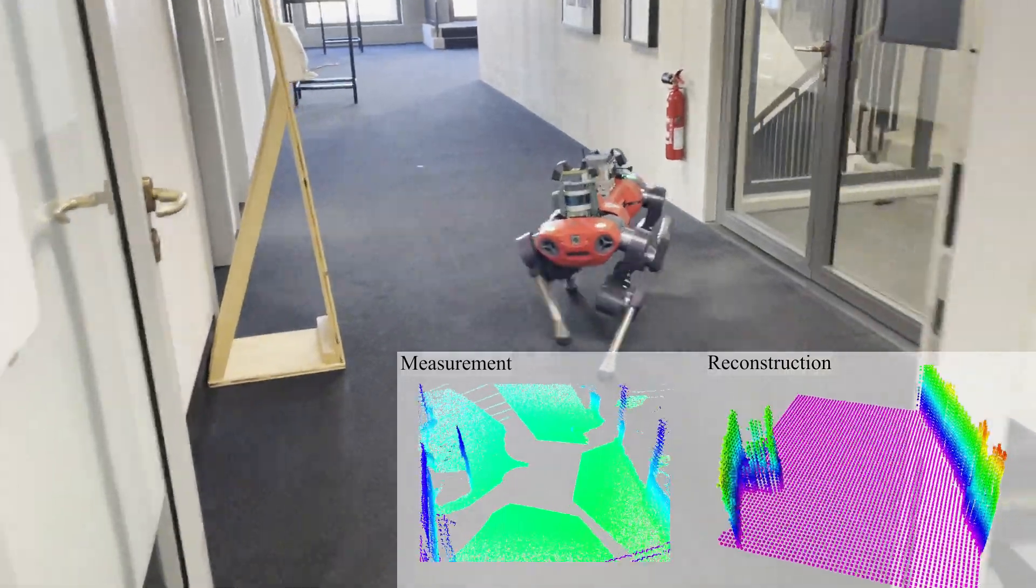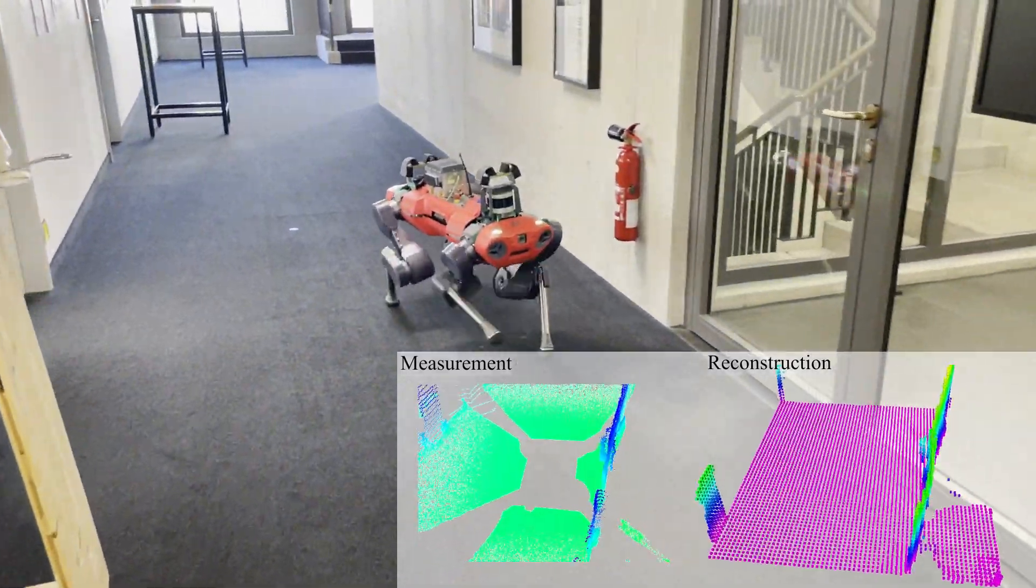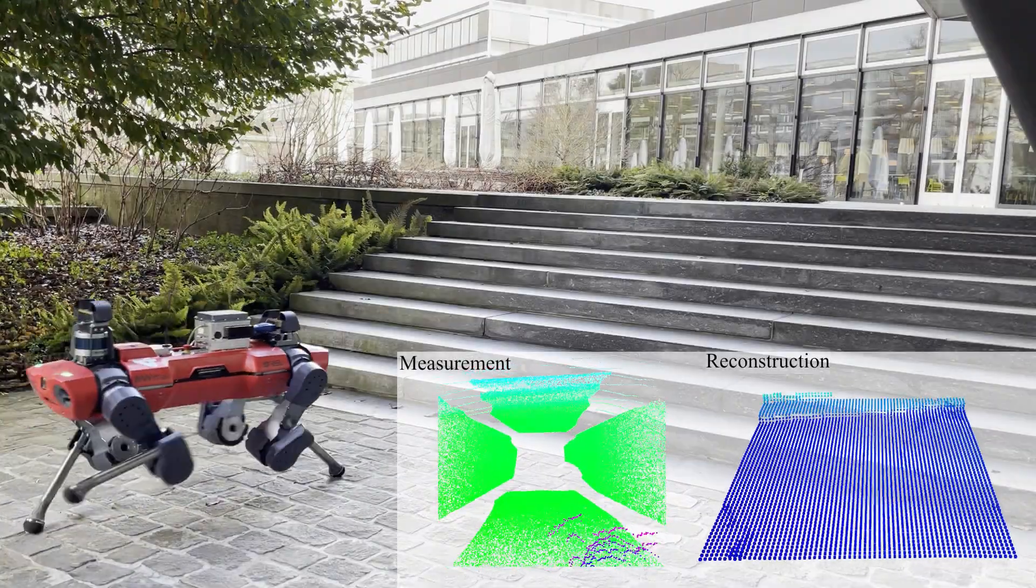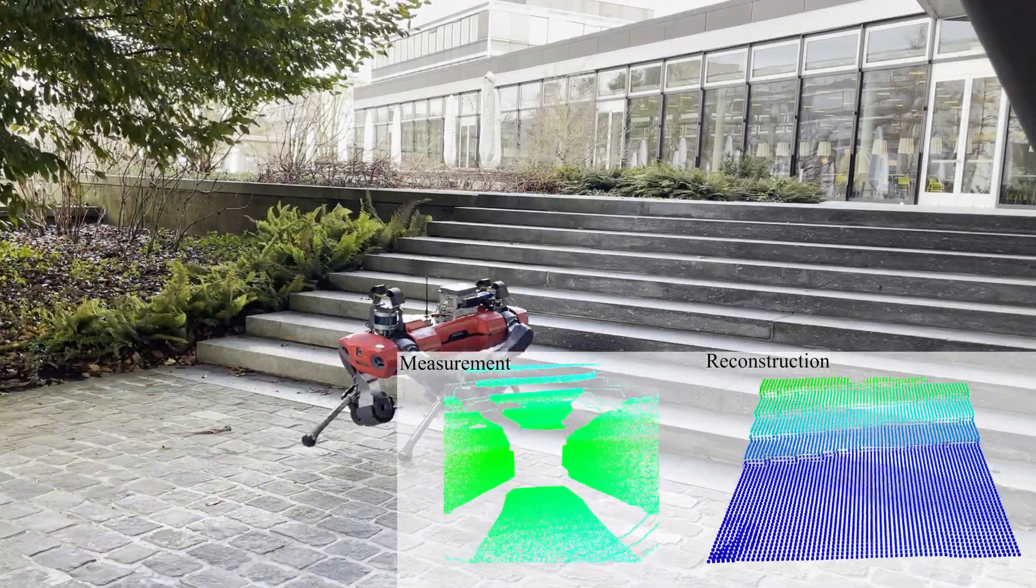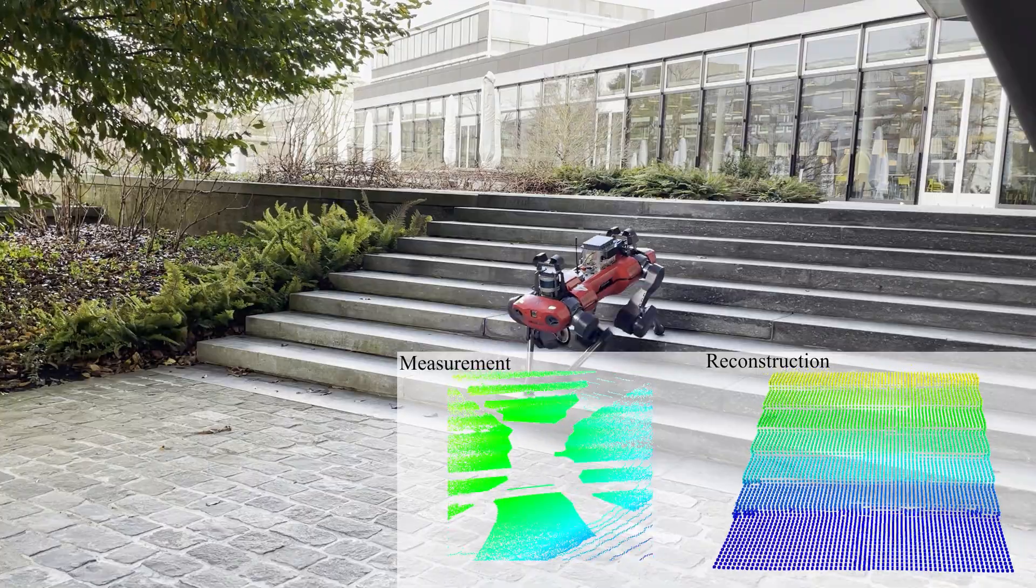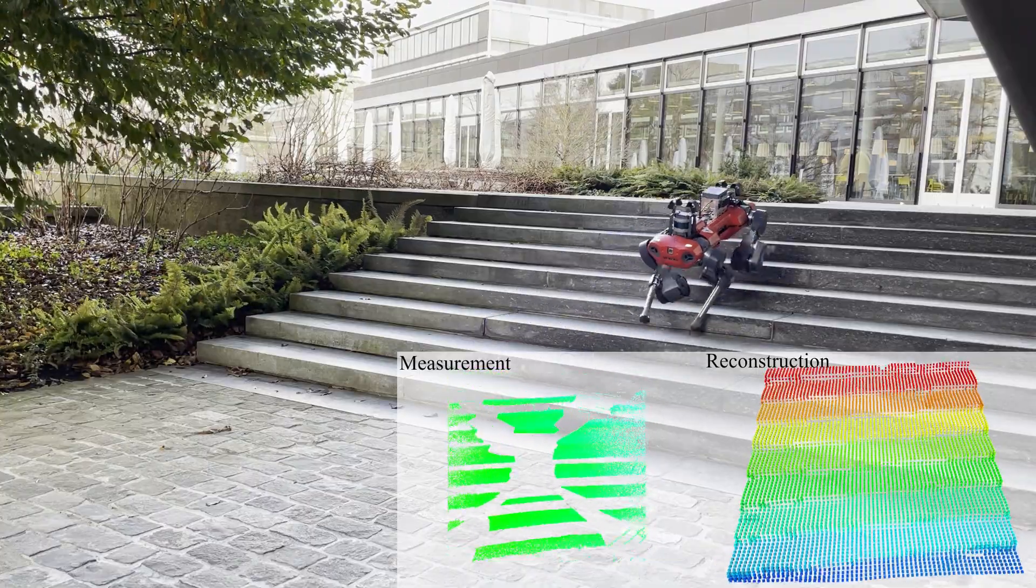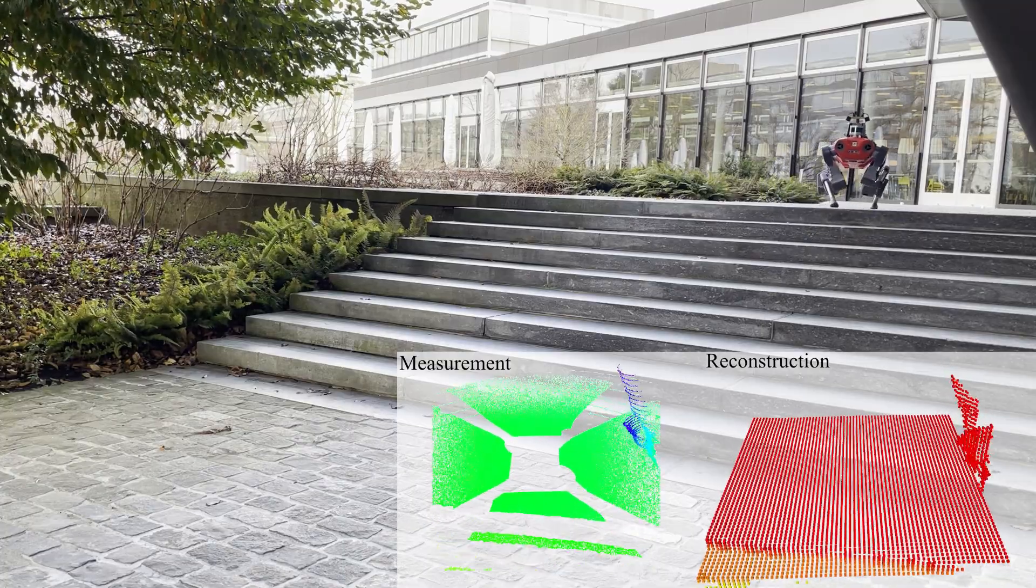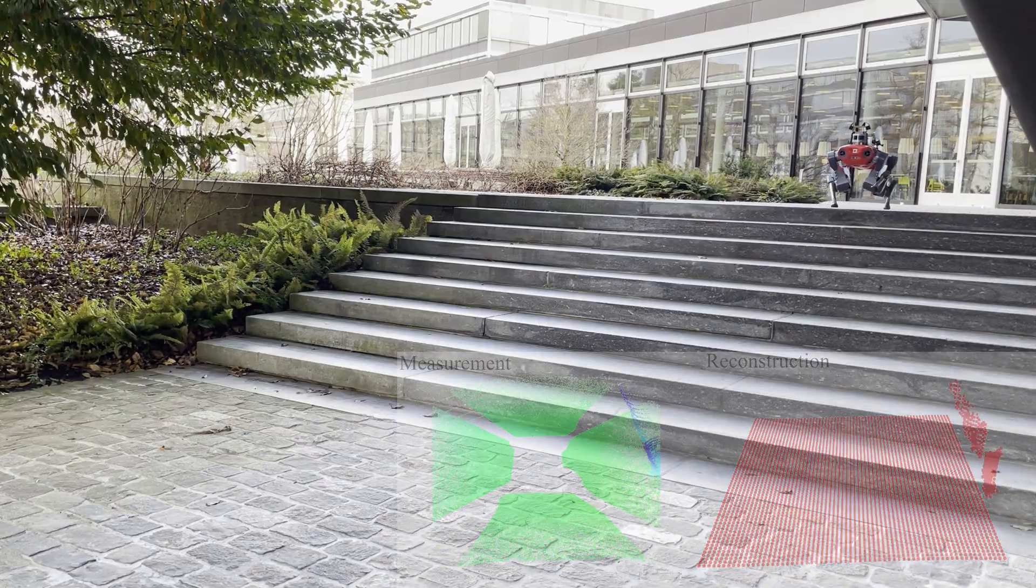Locomotion in such environments raises a couple of challenges. The camera arrangement results in heavily occluded measurements. You cannot see below the robot, which is a key location for proper foothold placement. Due to the dynamic motions of the base and impacts with the world, the point cloud measurements are noisy and the state estimator suffers from drift.